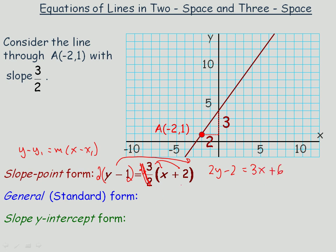I want everything to start with a leading coefficient of x that's positive. So I'm going to rearrange this way. I'm going to move the -2 and the 2y to that side. We'd have 3x minus 2y plus 8 equals 0. So the general form is 3x - 2y + 8 = 0.